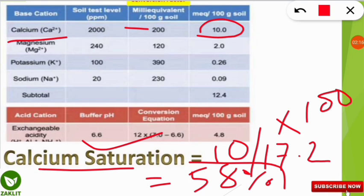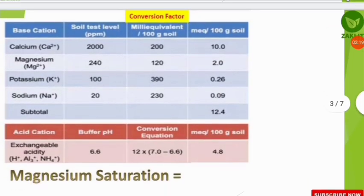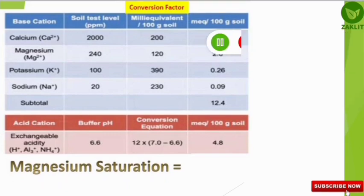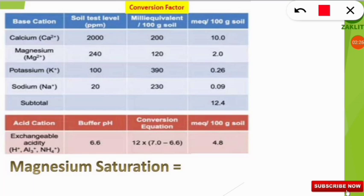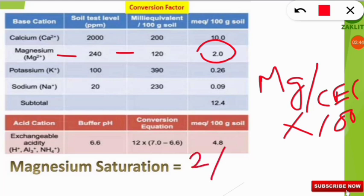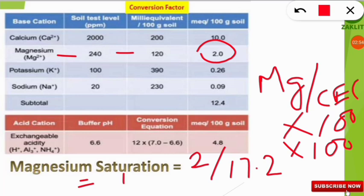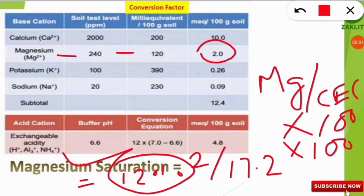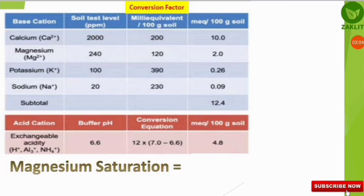Similarly, to calculate magnesium saturation, the formula is: magnesium (milliequivalents per 100 gram of soil) divided by the total CEC, multiplied by 100. The magnesium value from the table is 2 milliequivalents per 100 gram. So: 2 divided by 17.2, multiplied by 100, gives 12%. That is the magnesium base saturation of the soil.